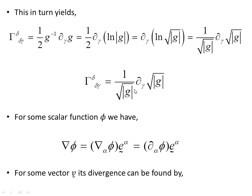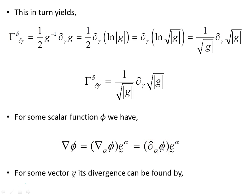For some scalar function phi, del phi is expanded out in its vector basis components — E alpha. Now, the covariant derivative of a scalar function is the same as the partial derivative of a scalar function, because the scalar function has no vector basis part; it simply has a component part. So only the partial derivative applies — there are no basis vectors to differentiate. The covariant derivative of a scalar is the same as the partial derivative of a scalar.